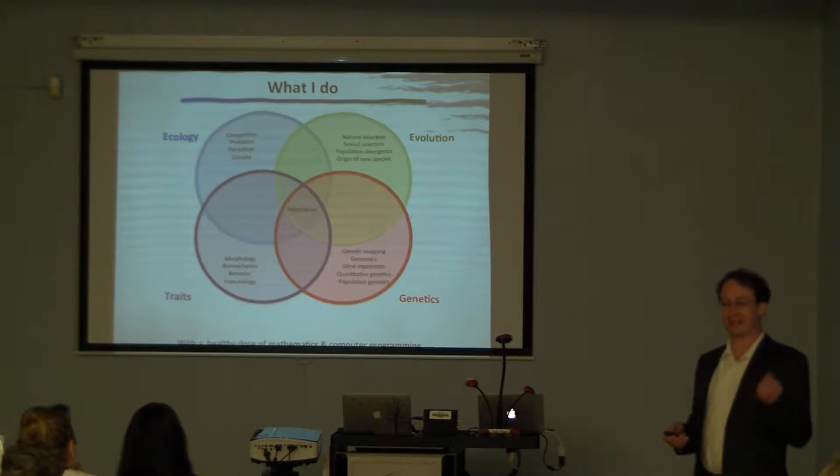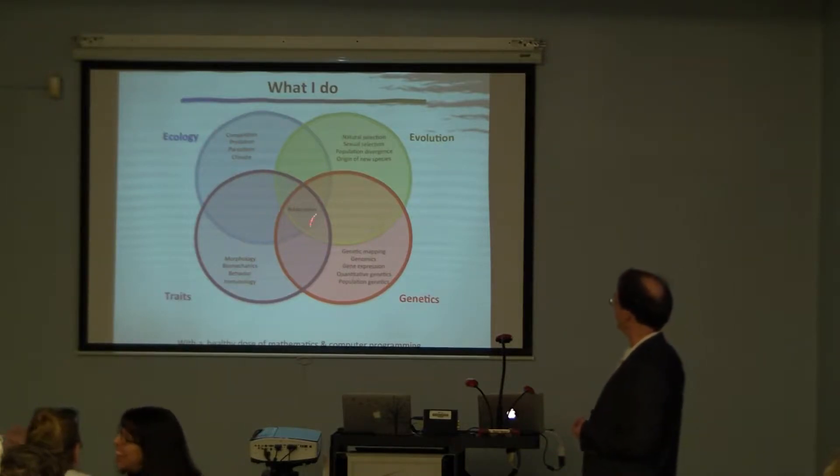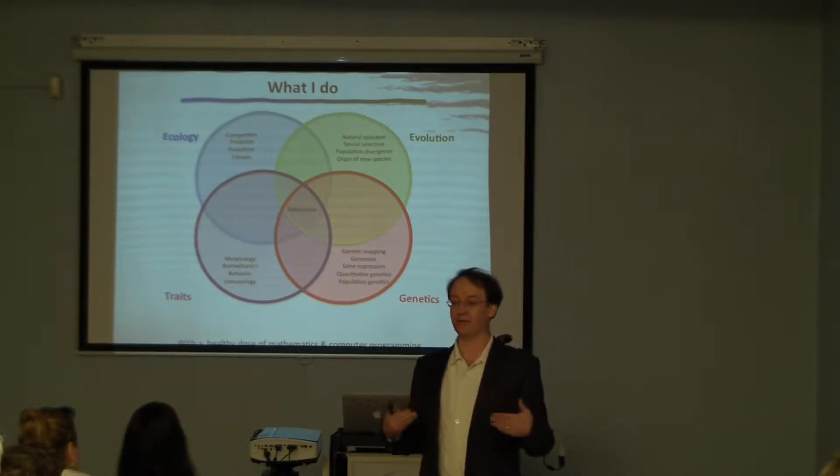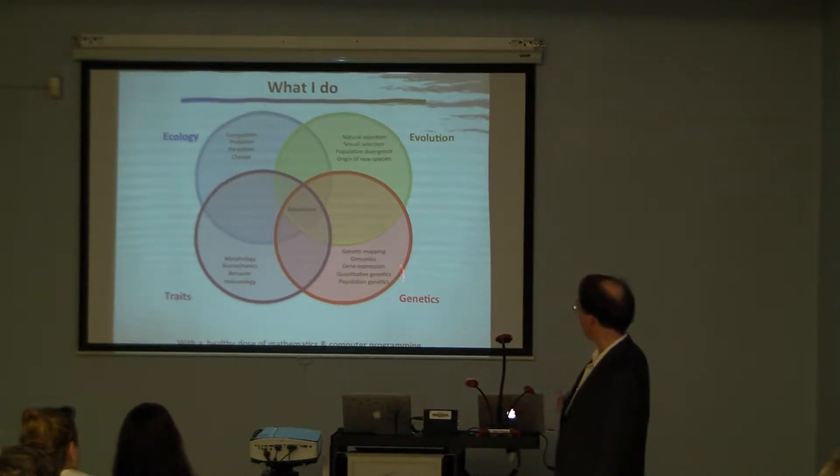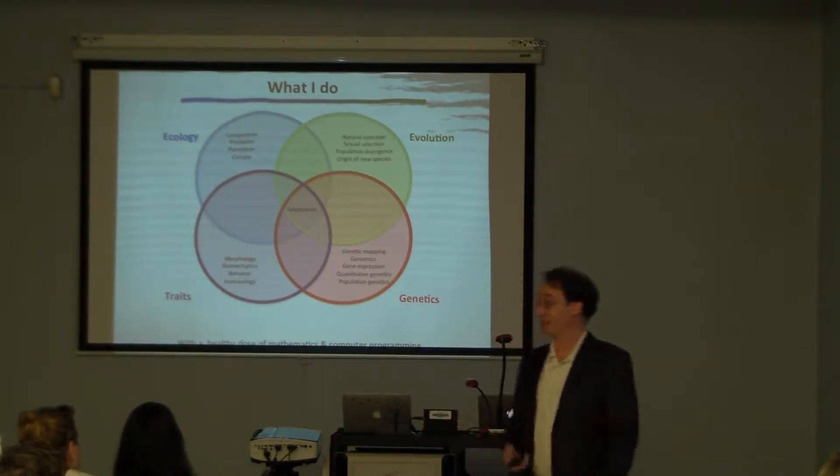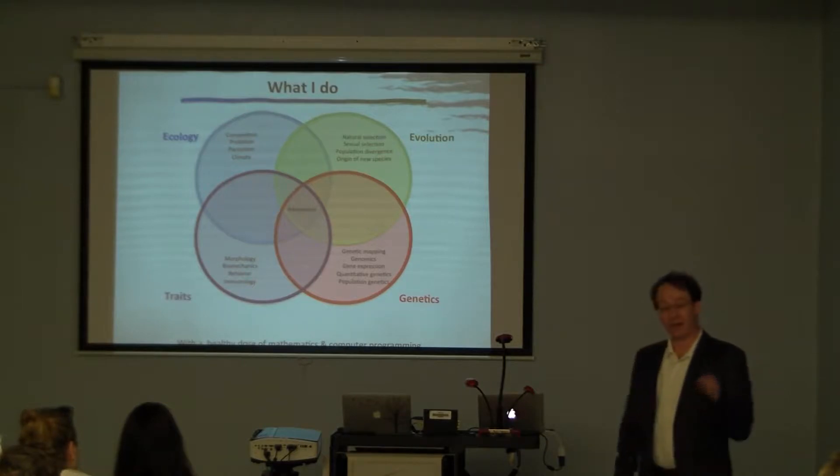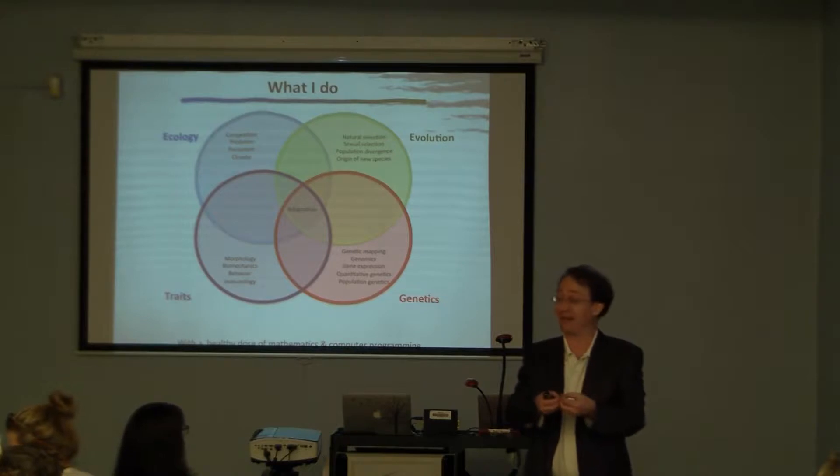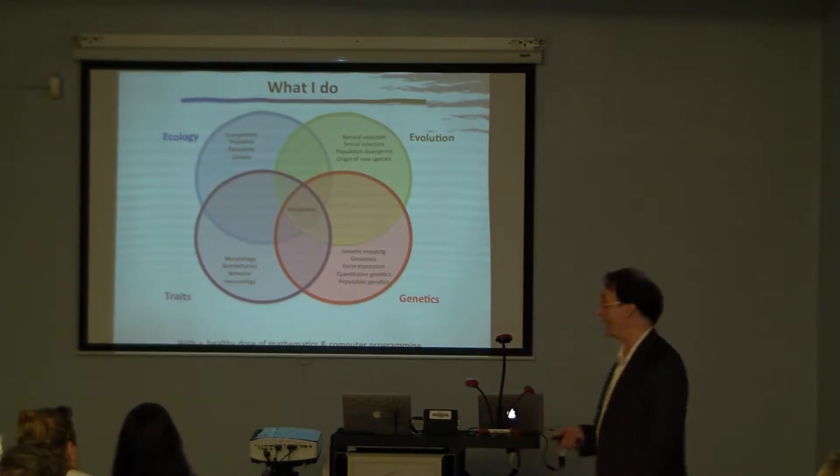So I want to give you an example of where these things intersect. Namely, I'm interested in adaptation. How is it that organisms evolve to fit their environment, and that fit requires changes in their traits which are underlaid by genes and are driven by the environment, competition, predation, parasitism, temperature, and so forth. And so, if I want to understand how organisms evolve to adapt to their environment, I need to bring all of these things together. I need to integrate these many perspectives and skill sets, hence the term integrative biology. So I'm going to give you a couple of examples of this.